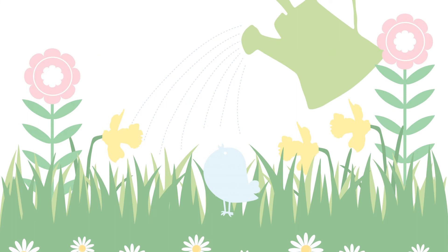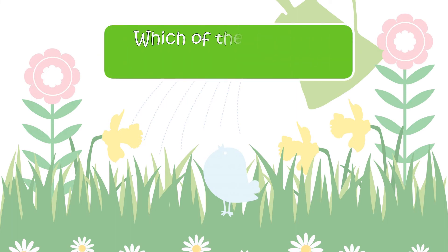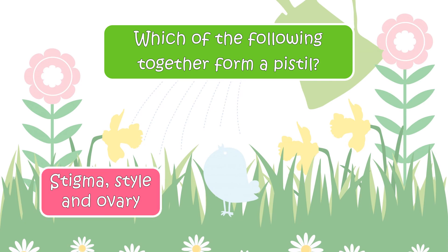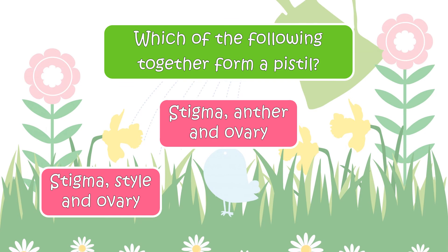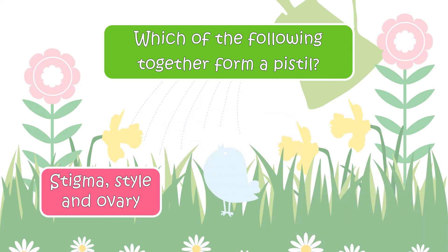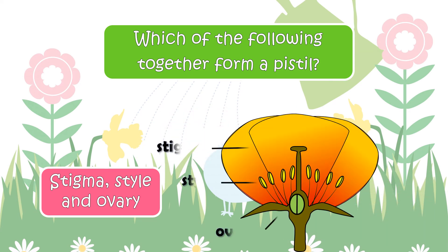Here is the next question. Which of the following together form a Pistil? Your options are: Stigma, Style, and Ovary; Stigma, Anther, and Ovary; or Anther, Pollen, and Filament. The correct answer is Stigma, Style, and Ovary.